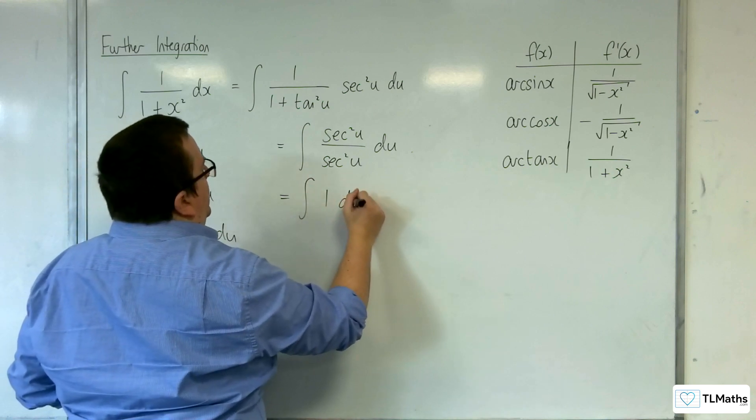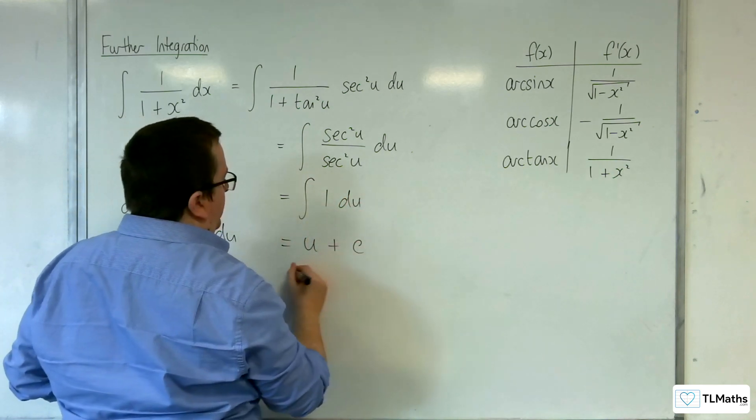So, we've got the integral of 1 du, which is u plus some constant c.